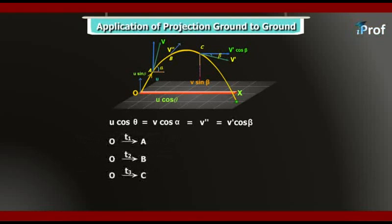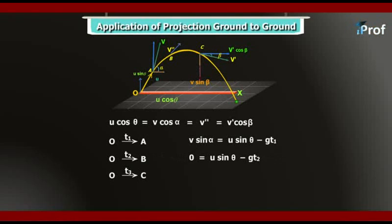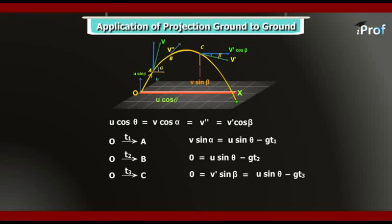Using the first equation of uniform accelerated motion in the vertical direction: at point A, v·sinα = u·sinθ − g·t1; at point B (highest point), 0 = u·sinθ − g·t2; at point C, the vertical component is v'·sinβ, so v'·sinβ = u·sinθ − g·t3. Since v'·sinβ acts in the vertically downward direction as shown in the figure, we write the equation in magnitude.